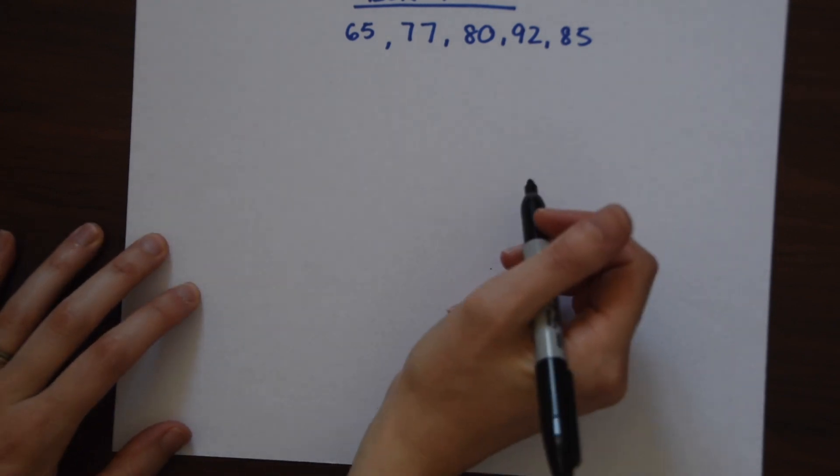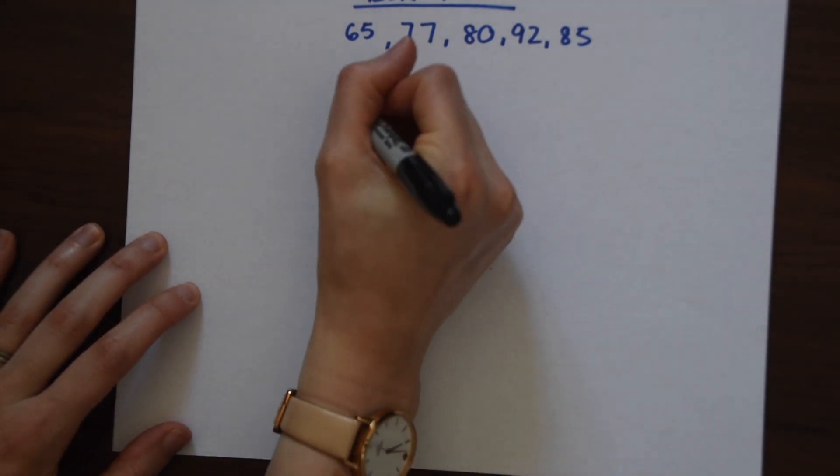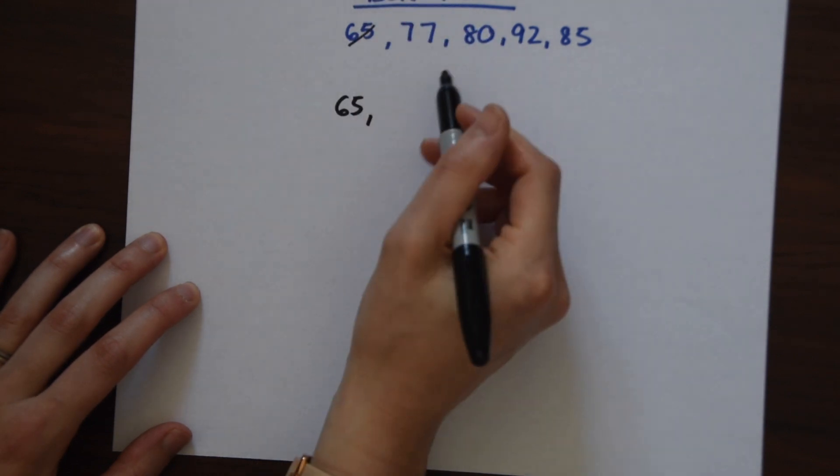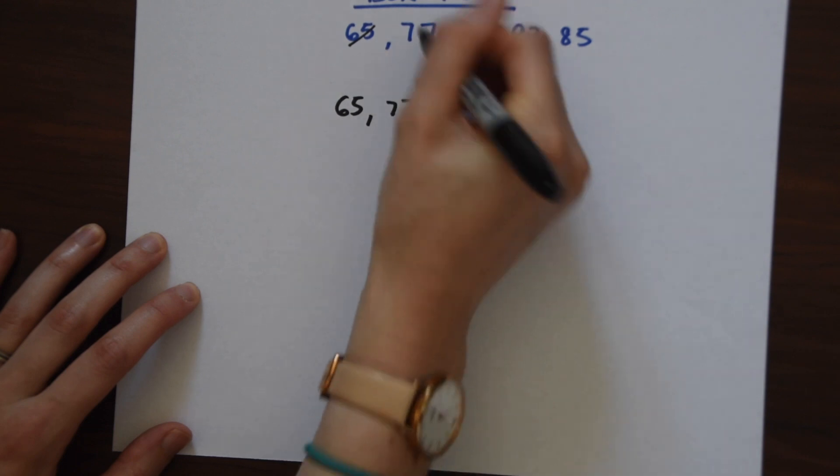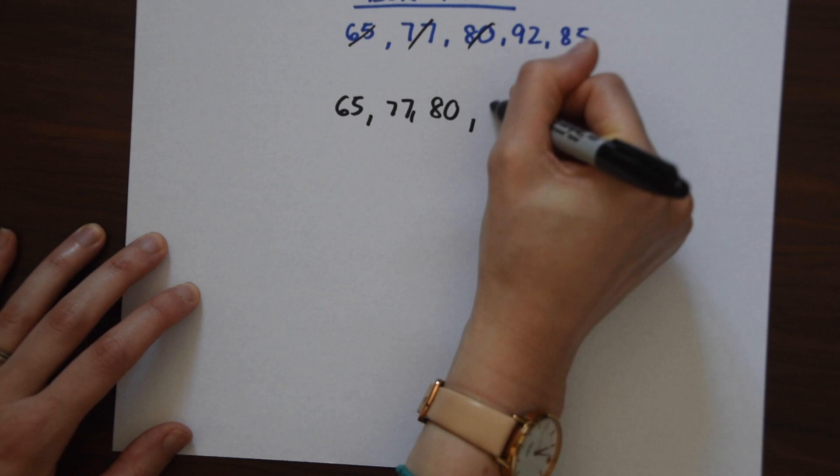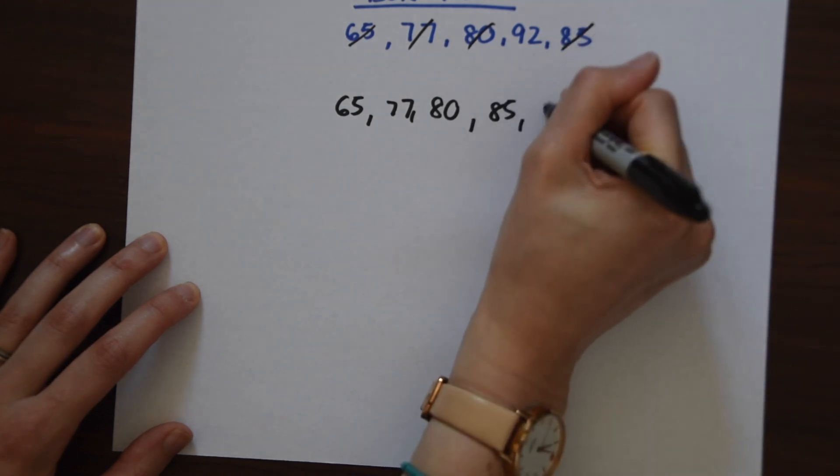So let's look at these numbers and we have 65. Let's just cross off when we put them in our lines. 65 then we have 77, 80, 85, and 92.